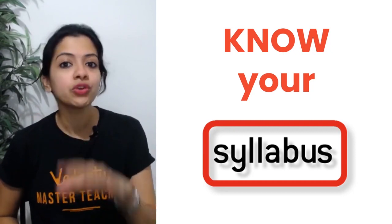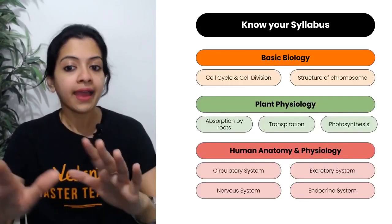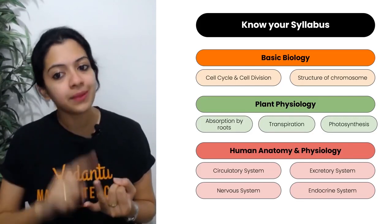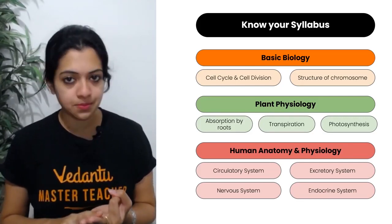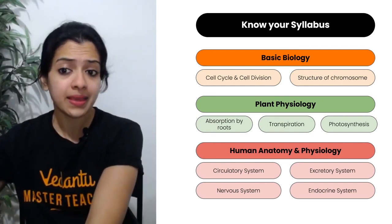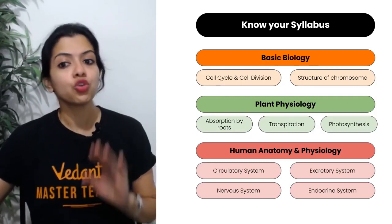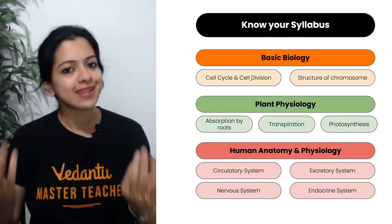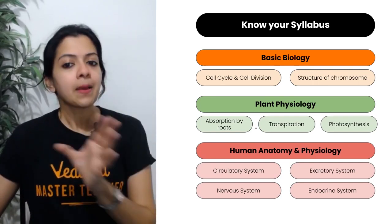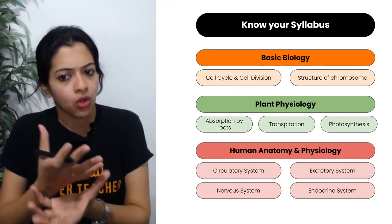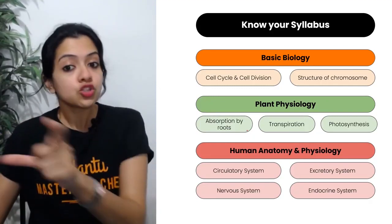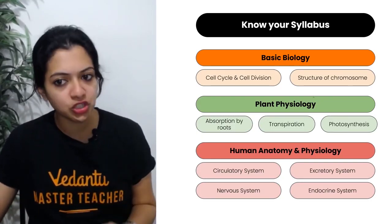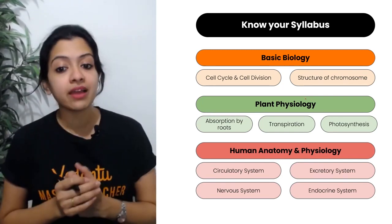Starting off, make sure you know your syllabus. In biology, I've listed all the chapters for you. There are three major units: Basic Biology, Plant Physiology, and Human Physiology and Anatomy. As per the 2021 board exam update, Basic Biology has just two chapters — you can even club them as one if you like, though they have enough content to stand independently. Overall, you will have a total of nine chapters.